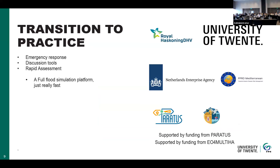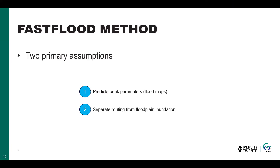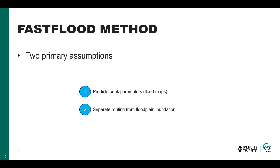People wanted probabilistic outputs and all kinds of different needs. We've been trying to grow and adjust the tool accordingly. I do want to talk about the limitations and assumptions a tool like this makes — those are important. One key characteristic is that it only predicts the peak parameters, which is both a defining feature and a limitation. The model also separates, algorithmically, the routing of water from the floodplain inundation calculations.